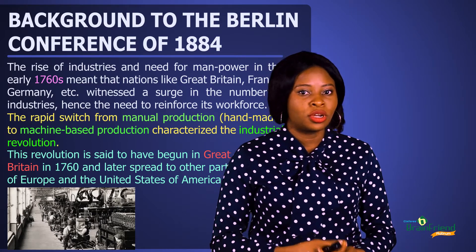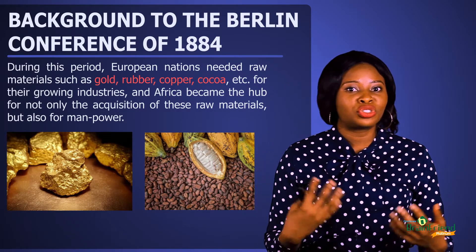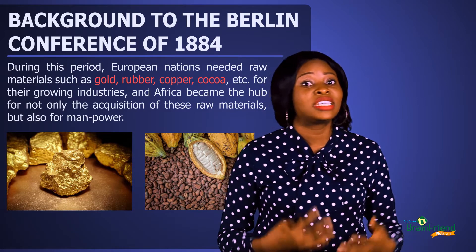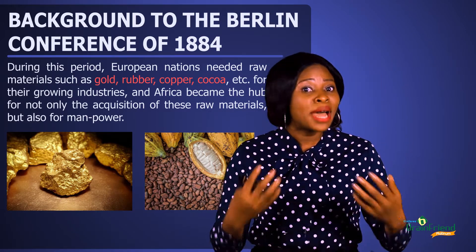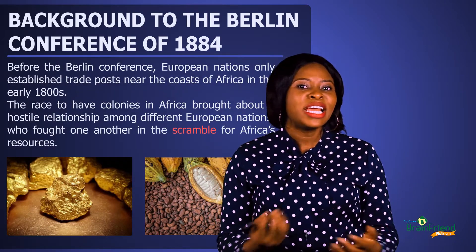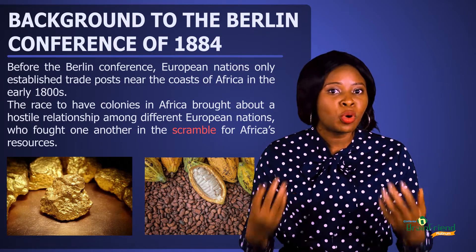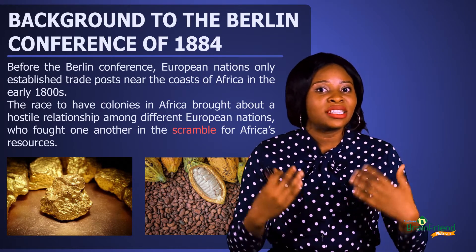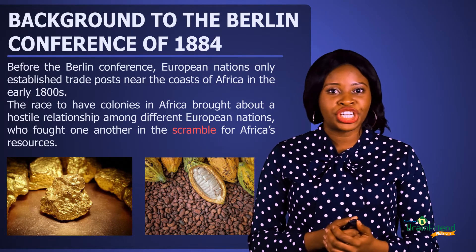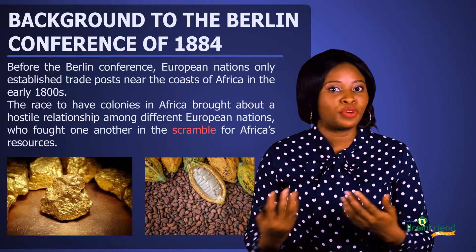During the Industrial Revolution, European nations needed raw materials for their growing industries, such as gold, copper, cocoa, and the likes. Africa had these resources in abundance and also had the manpower needed for these growing industries. In the early 19th century, before the Berlin Conference, European nations only established trade posts at the coast and never really interacted with African nations. However, this was going to change as European nations started competing amongst themselves to acquire resources from Africa.